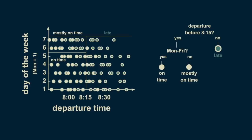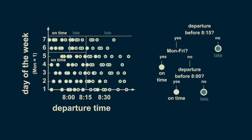We can further refine our estimate by subdividing the before 8:15 departure times into weekday and weekend. A weekday departure before 8:15 is confidently on time. However, weekend departures before 8:15 are mostly on time but not entirely. We can subdivide our weekend pre-8:15 departure times into before and after 8 o'clock. Before 8, almost all arrivals are on time; between 8 and 8:15, the majority are late. Now we have a two-dimensional decision tree divided into four regions. This is a three-level decision tree — not all branches need to extend to the same number of levels.